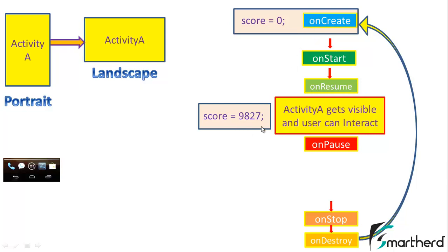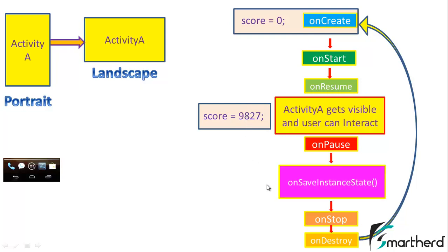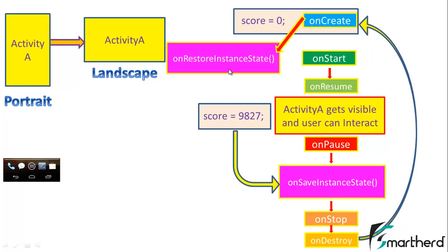To save this variable data, we have the onSaveInstanceState method. Soon after onPause, the onSaveInstanceState method is called. This method helps us restore the value back to 9827 instead of being re-initialized to 0. We store our value in the onSaveInstanceState method with the help of a Bundle. To restore the value back, we have another method called onRestoreInstanceState, which is called soon after onCreate. This method restores the value of 9827 back into the score variable.